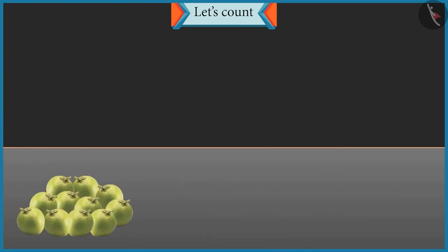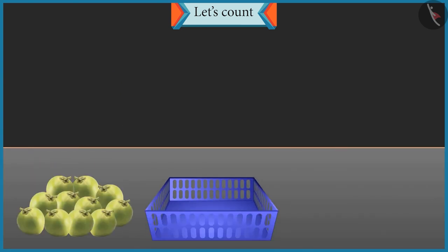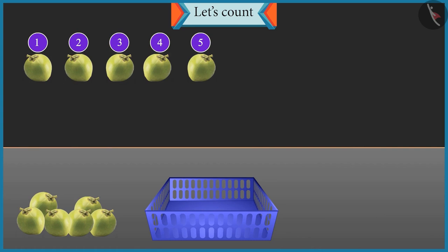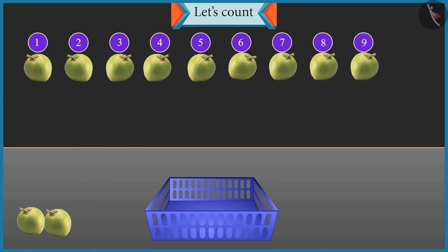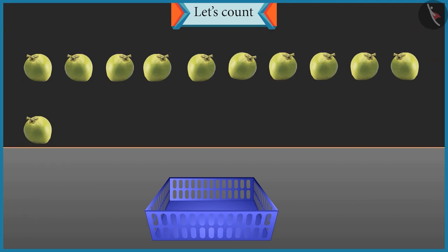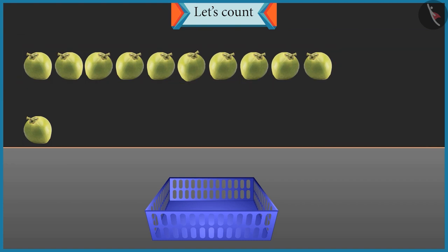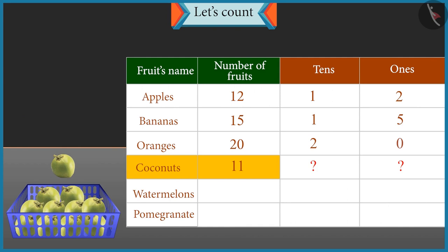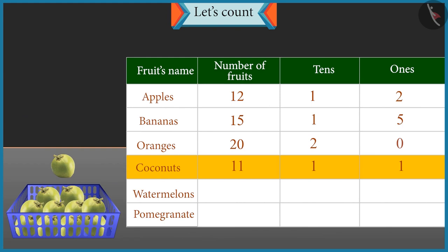Well done Chotu. Now count these coconuts and place them in the basket. One, two, three, four, five, six, seven, eight, nine, ten and eleven. So how many groups of ten coconuts are there, and how many single coconuts are left? There is one group of ten coconuts and one single coconut left. So it will be one tens and one ones in eleven.